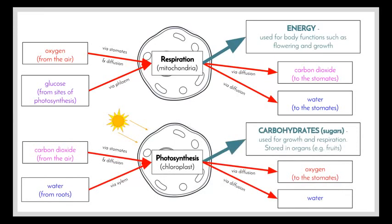Looking at photosynthesis, the general equation is almost the reverse of the respiration reaction. Carbon dioxide and water are the reactants — plants get carbon dioxide from the air and water drawn up through their roots. Photosynthesis takes place in the chloroplast, and we need sunlight and chlorophyll. The products are carbohydrates (sugars) used for growth and respiration, and sometimes stored in plant organs such as fruit. Oxygen is also released to the atmosphere via the stomates, along with some water.